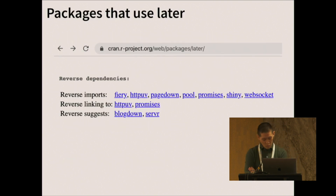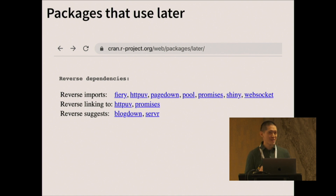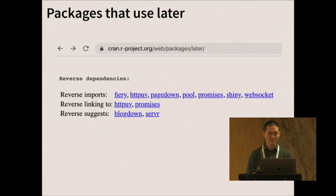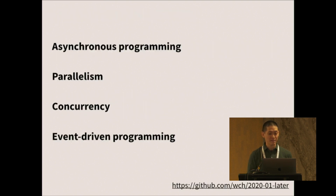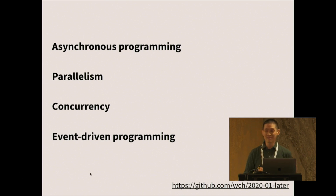I looked at the Later CRAN page and noticed that even though it's been out for a couple of years, there aren't that many packages that use it, and all of them are maintained by people who work at RStudio. I'm hoping that, since we have a lot of this knowledge internally and battle scars working on this stuff, if you're working on async programming, parallelism, concurrency, or event-driven programming, this will be useful for you. The URL is here — the materials aren't up there right now, but they will be. Thank you.